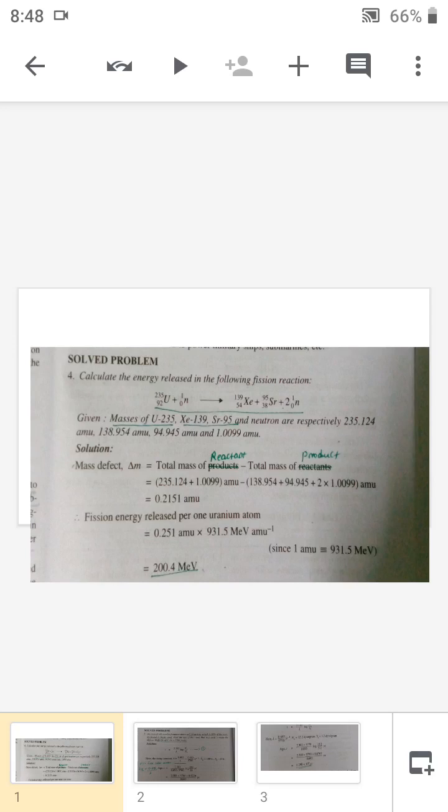The mass of uranium, xenon, strontium, and neutron are given. First of all, we have to find out the mass defect. Mass defect is the total mass of the reactant minus total mass of the product. So substitute the mass of uranium and neutron minus the product—that is xenon, strontium, and neutron—and we will get the mass defect as 0.2151 amu.